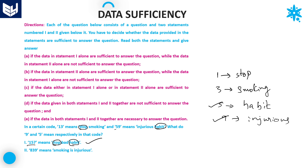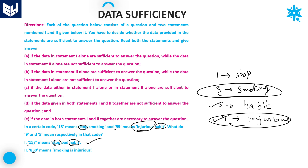Now let's check statement 2 alone. 3 is common in the first code and the code is 'smoking', so 3 equals smoking. Next, 9 is common and 9 means injurious. Since smoking and injurious are determined, automatically 5 equals habit. We are looking for 5 and 9, and both are found. So either statement 1 alone or statement 2 alone is sufficient to get the answer.